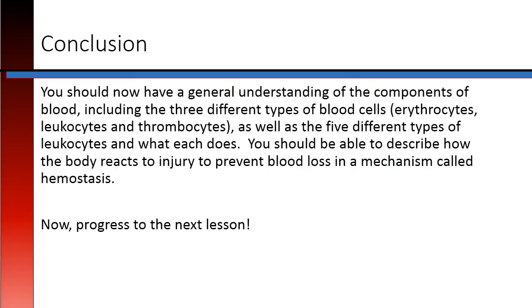Conclusion. You should now have a general understanding of the components of blood, including the three types of blood cells — erythrocytes, leukocytes, and thrombocytes — as well as the five different types of leukocytes and what each does. You should be able to describe how the body reacts to injury to prevent blood loss in a mechanism called hemostasis. Now, progress to the next lesson.